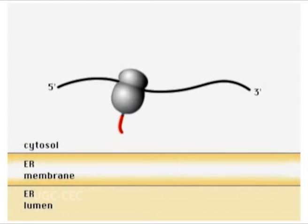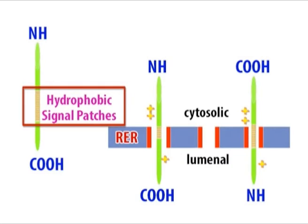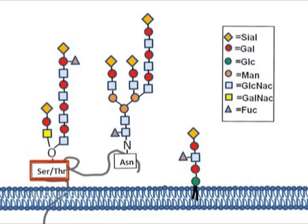In contrast to signal sequences that direct protein translocation to the ER, the recognition determinant leading to mannose phosphorylation — and thus ultimately targeting proteins to lysosomes — depends on the three-dimensional conformation of the folded protein. Such determinants are called signal patches, in contrast to linear targeting signals. Proteins can also be modified by addition of carbohydrates to side chains of serine and threonine residues within specific sequences, known as O-linked glycosylation. These modifications take place in the Golgi apparatus by sequential addition of single sugar residues.